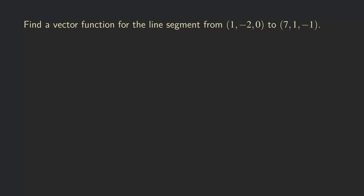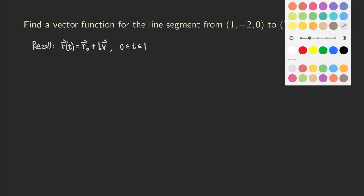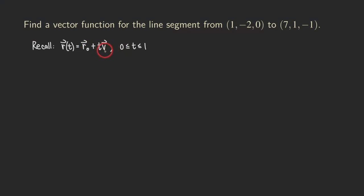So let's get started. First, we are going to write down the vector function. If we recall, we have R of T equal to R0 plus T times V. And there should be a restriction because we are talking about a line segment, not a line. So the restriction for T is from 0 to 1, including both 0 and 1. You may ask: what are R0 and V? We know that T is the parameter, but what is R0?